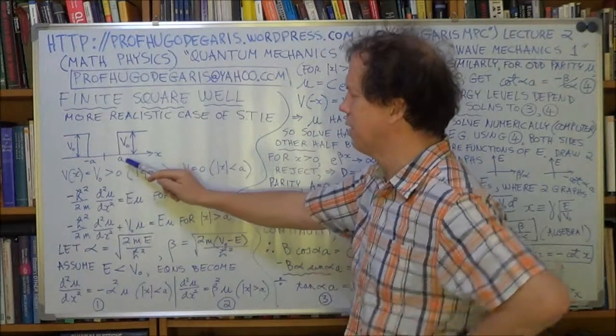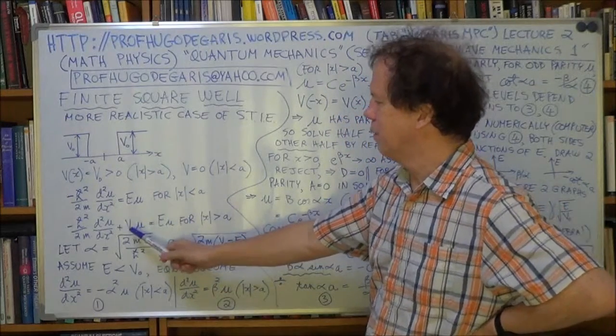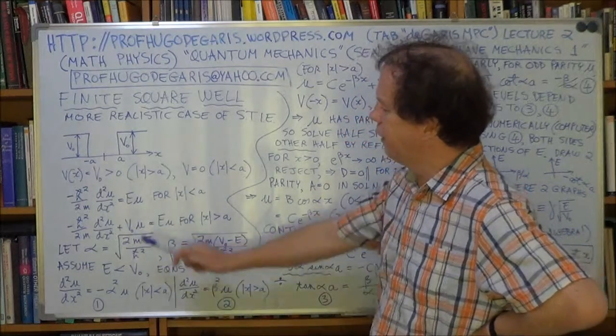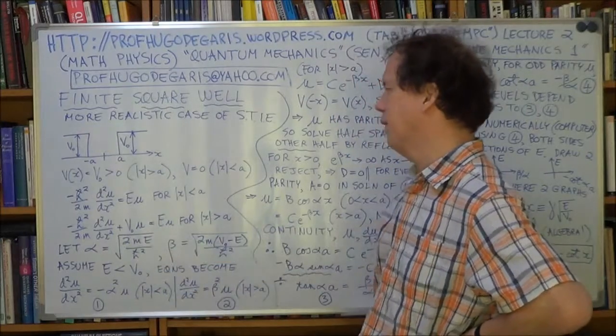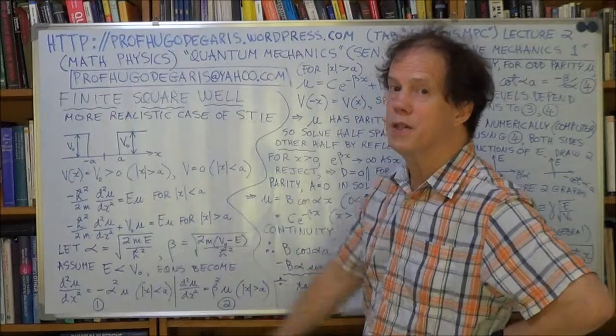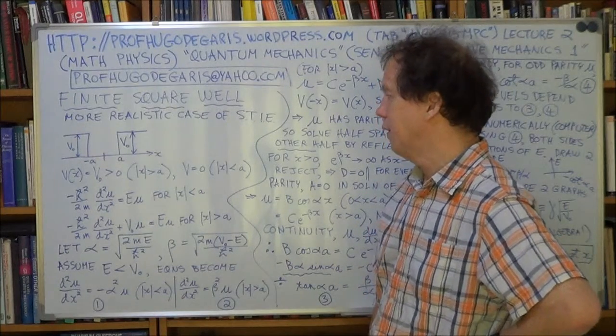When x is greater than a and x is less than minus a, then you use your STI with a finite value for the potential, it's V0, so you plug that in. Now we have two equations, so things are more complicated. We have to solve these two equations.